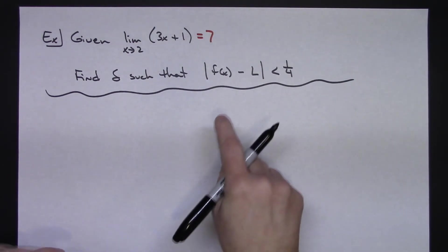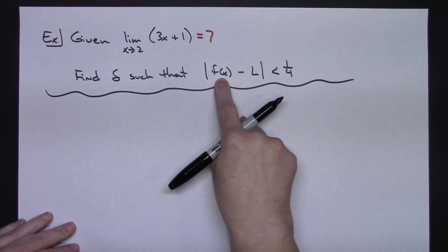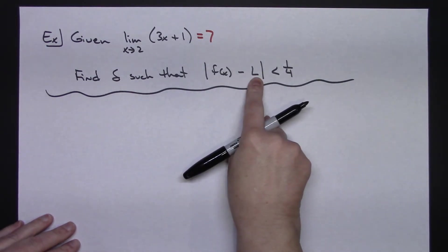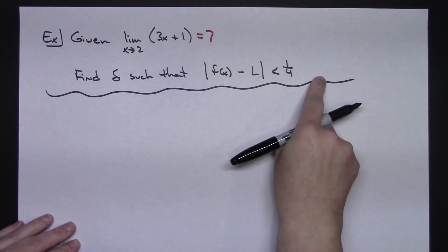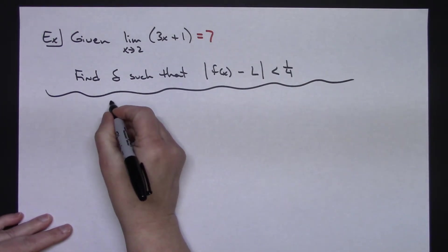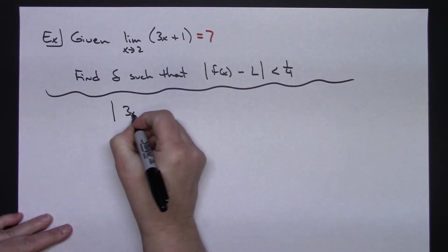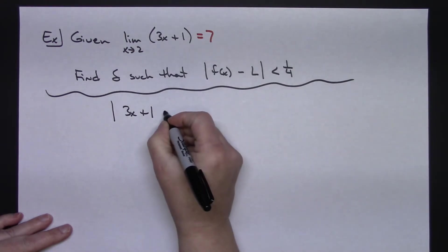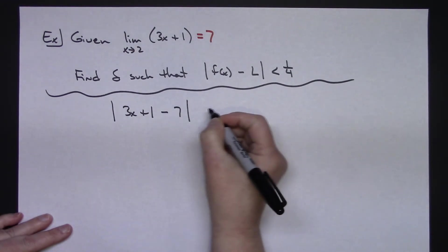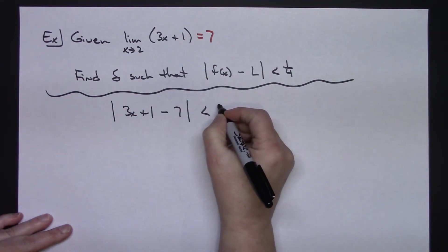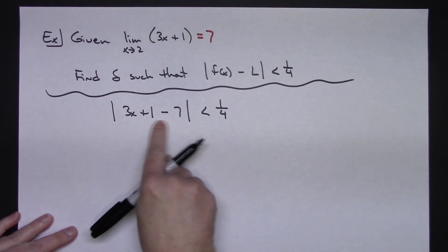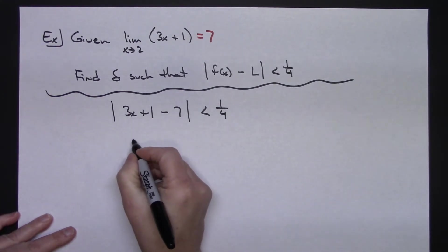So what I'm going to do here is I'm going to take my function, I'm going to subtract the value of my limit, absolute value bars is less than 1 fourth. So absolute value of 3x plus 1 minus 7 absolute value is less than my epsilon value of 1 fourth. Now I'm going to calculate a little arithmetic in here, I'm going to do some subtraction there.